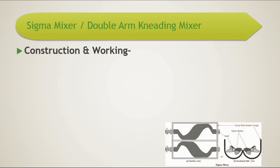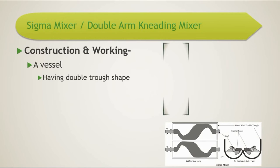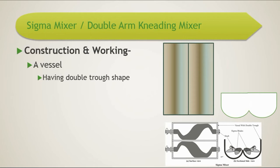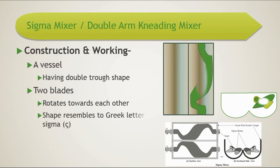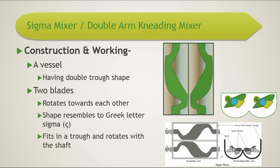The sigma mixer is also called a double arm kneading mixer. It has a vessel with a double trough shape and two blades which rotate towards each other. The shape of the blades resembles the Greek letter sigma, which is why it is called a sigma mixer. Each blade fits in a trough and rotates with the shaft.